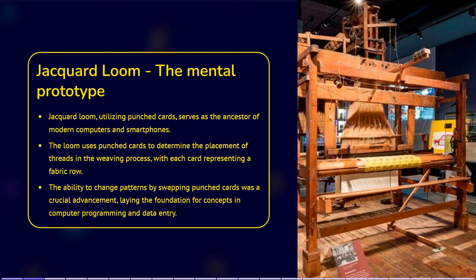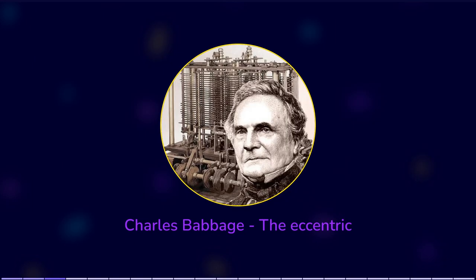The Jacquard loom used replaceable punched cards to control what the weave would look like, and the same machine could be fed cards with different patterns punched on the card. Ironically, this is considered an important step in the history of computing hardware. The ability to change the pattern by changing cards was an important conceptual precursor to the development of computer programming and data entry.